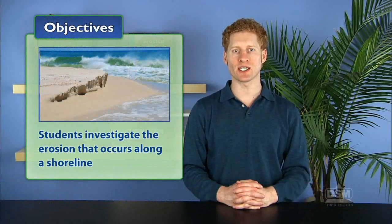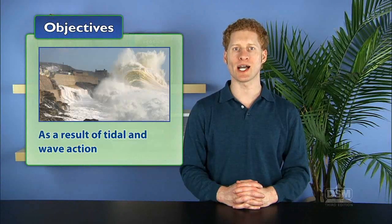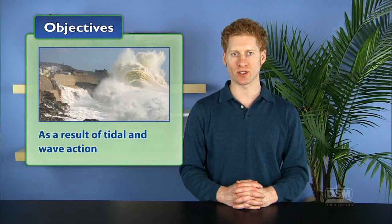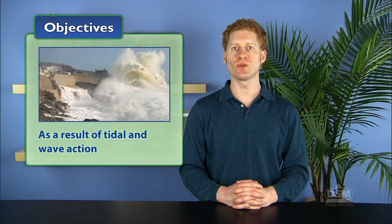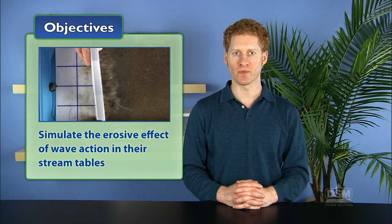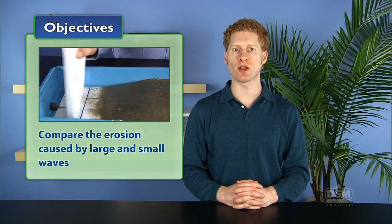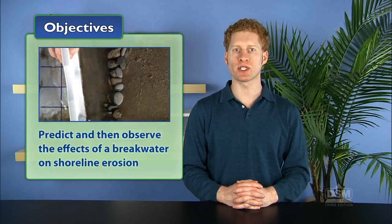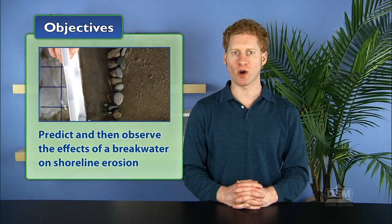In Activity 10, Shoreline Erosion, students investigate the erosion that occurs along a shoreline as a result of tidal and wave action. Students first simulate the erosive effect of wave action in their stream tables. Then they compare the erosion caused by large and small waves, and finally predict and then observe the effects of a breakwater on shoreline erosion.